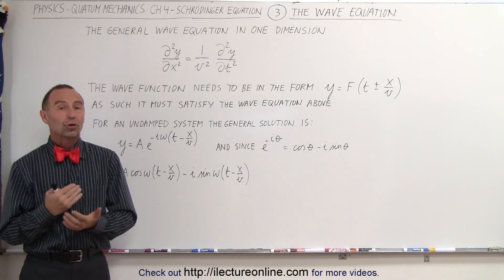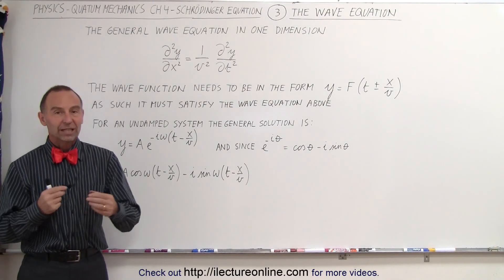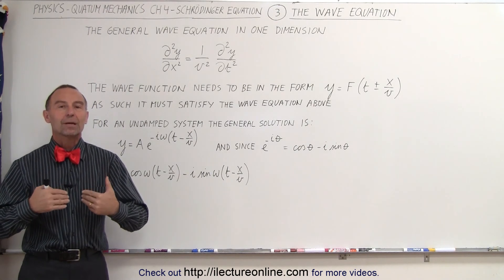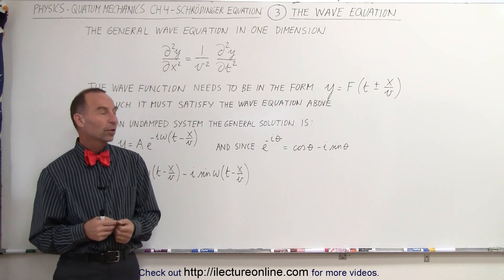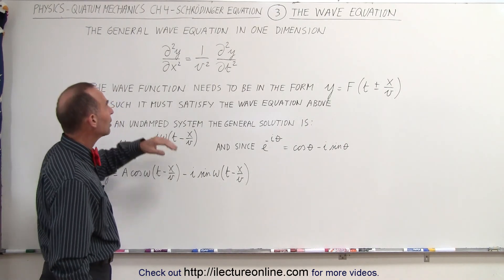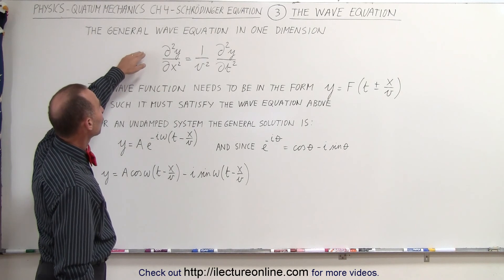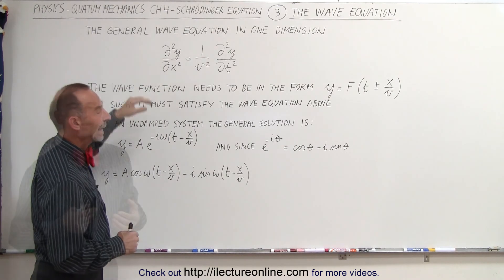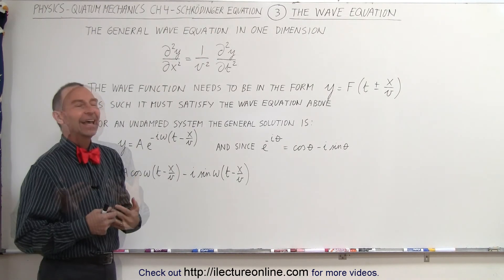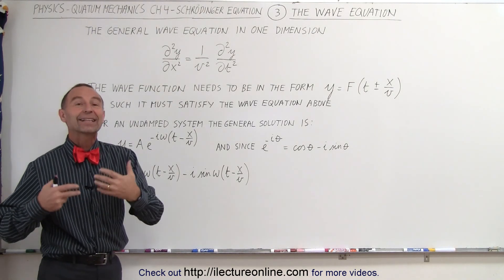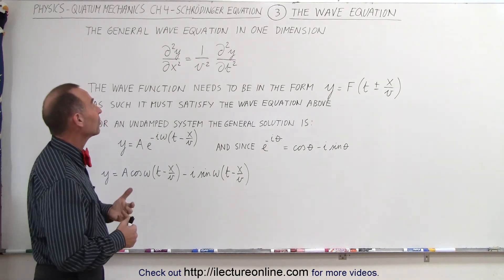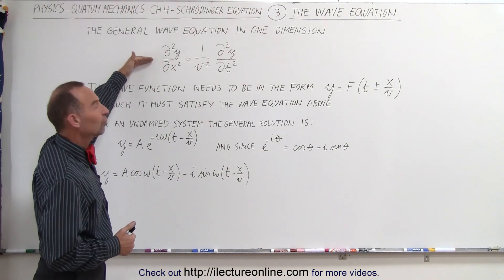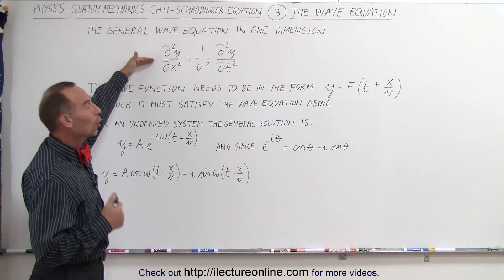The third aspect that the Schrödinger equation needs to adhere to is that it needs to be a proper wave equation. Here is the generalized wave equation in one dimension. An equation that claims to be a real wave equation needs to satisfy this general equation.